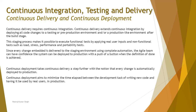Continuous delivery requires continuous integration, because every time you integrate something with the existing system, you deliver it. Continuous delivery extends continuous integration by deploying all code changes to a testing or pre-production environment — a production-like environment — after the build stage. Organizations use this pre-production environment to check that everything is working correctly in a setting similar to the real one.